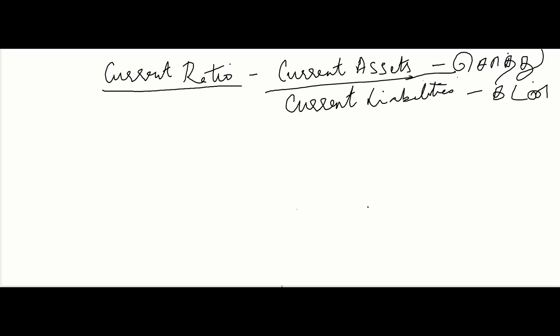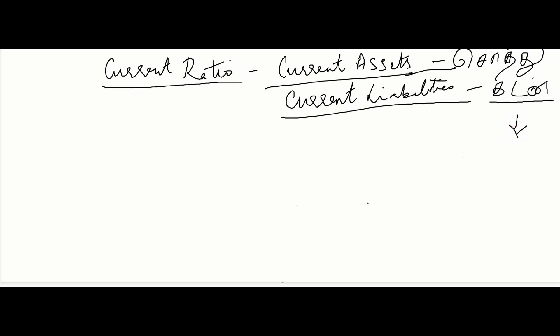How are current assets assessed? If you don't have current liabilities, you can still operate. If you don't have short-term borrowings, you can do that. If you don't have a supplier, you can do that. So when a loan is due, it becomes a current liability.